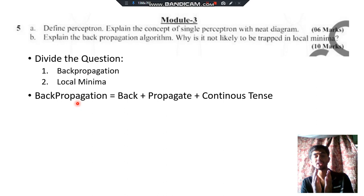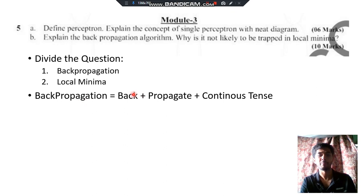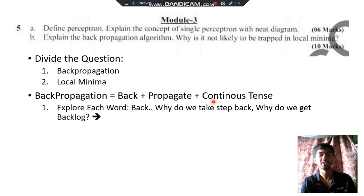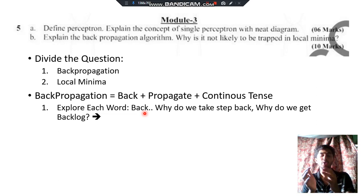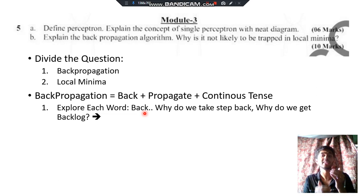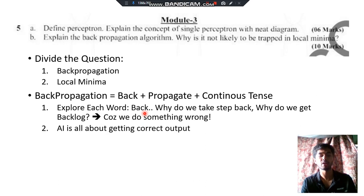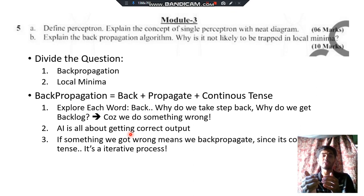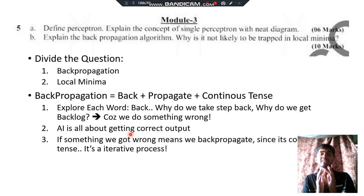Backpropagation — break it into 'back' plus 'propagation.' Back means: why do we take a step back in life? Why do we get a backlog? Because something went wrong and we need to back up. In AI, the focus is on getting the correct output. If we are not getting the correct output, we have to come back — that's what backpropagation is. We reach a goal state, get a wrong output, and come back from it. If you actually know backpropagation, that is exactly what it is.